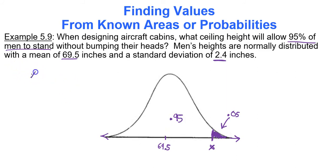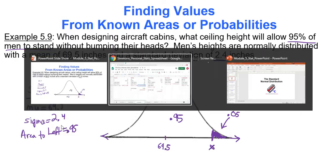So I'm trying to find that data value. So consulting Google Sheets, when you're finding data values from area, you obviously still write what is mu, 69.5. What is sigma, your standard deviation, 2.4. And then area to the left, which is .95. Because you want 95% to not hit their head on the ceiling. So Google Sheets is going to tell us.